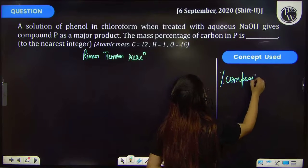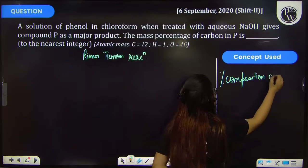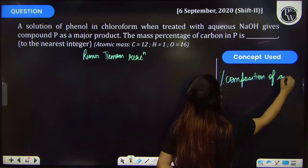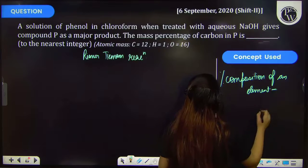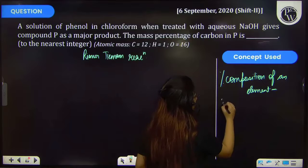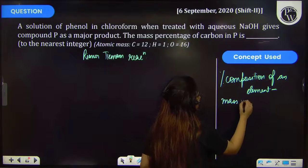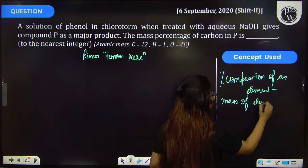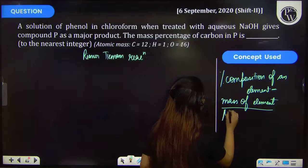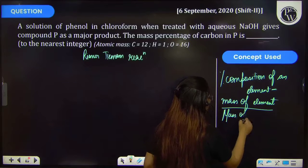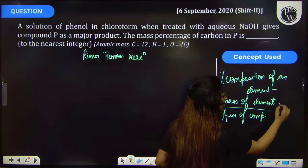Percentage composition of an element, that is equal to mass of that element present upon the total mass of the compound into 100.